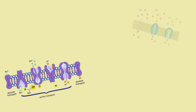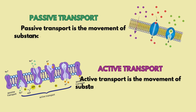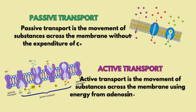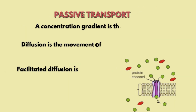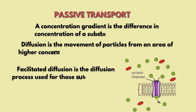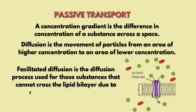In passive transport, the substance passes through the membrane without requiring cellular energy — no ATP is needed. Two main concepts are involved: concentration gradient and diffusion. A concentration gradient means molecules move from a higher concentrated area to a less concentrated area. Diffusion is the movement of particles from higher concentration to lower concentration.